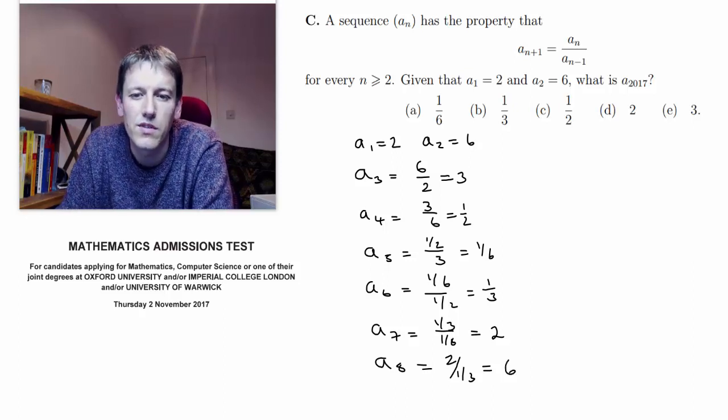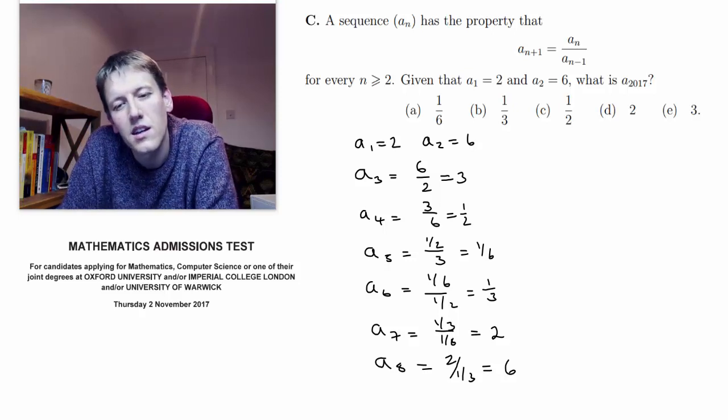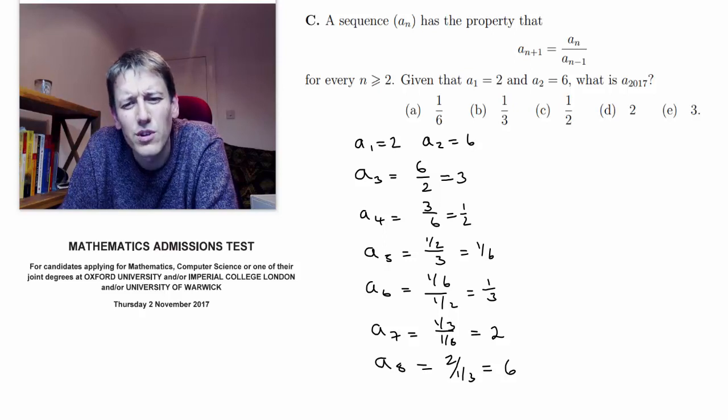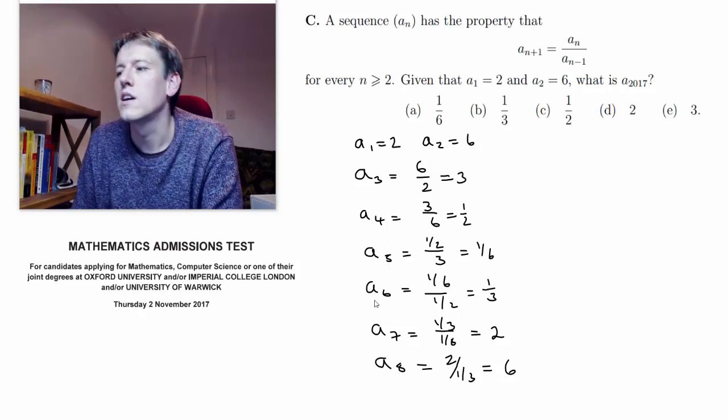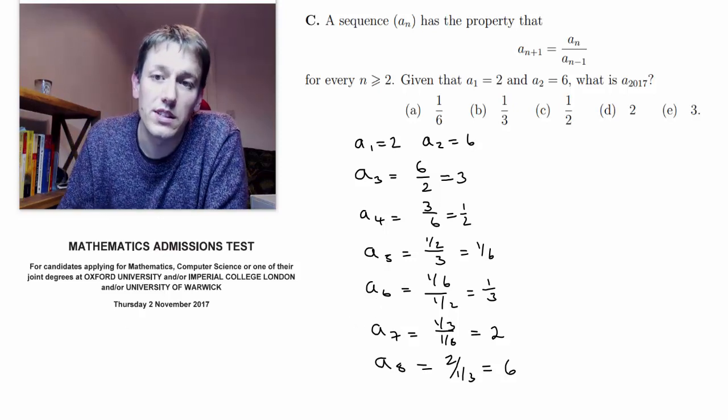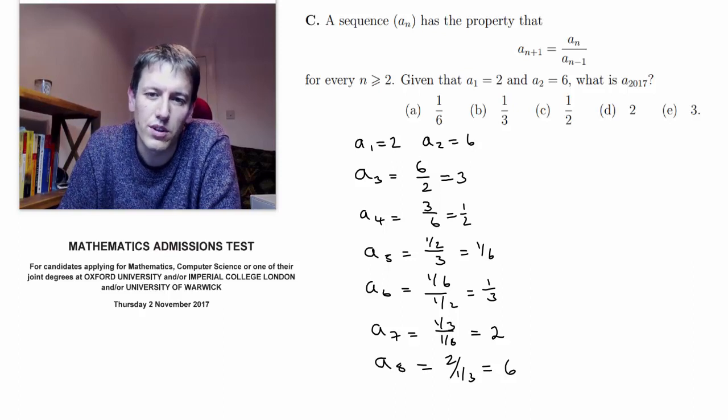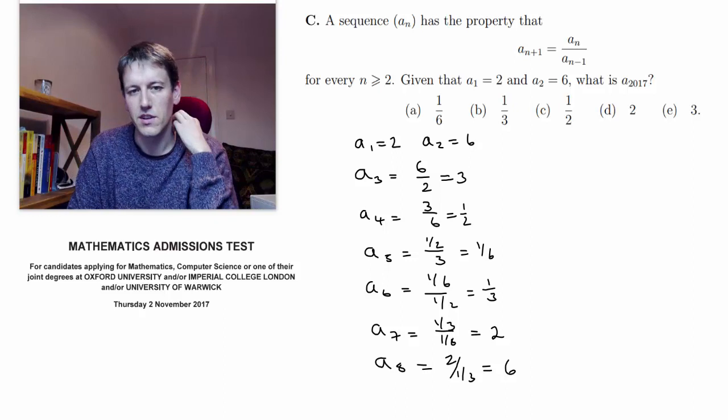We can see that we've got the same starting pair 2 and 6 in the 7th and 8th terms. So from here onward, this sequence is going to repeat over and over again, because we're using the same rules to calculate future terms and always basing it on the two previous ones. The 9th term is going to be the same one that came after the 6 and the 2 before, and then the 10th one, the same one after that.